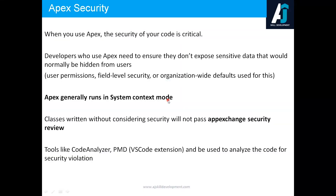From Salesforce you might be aware of security types: object level security, field level security, and record level security. As an admin, we do this configuration in the UI. Record level security is done with sharing settings, object level security is configured at the profile level, and field level security can also be done at the profile level.